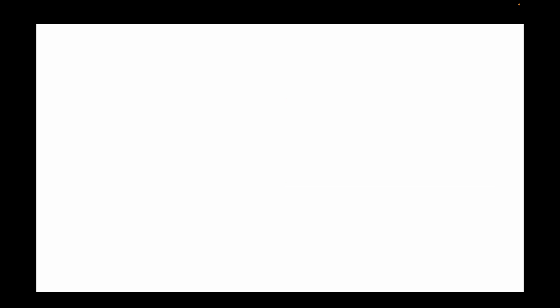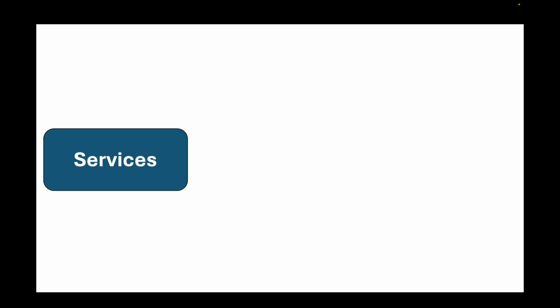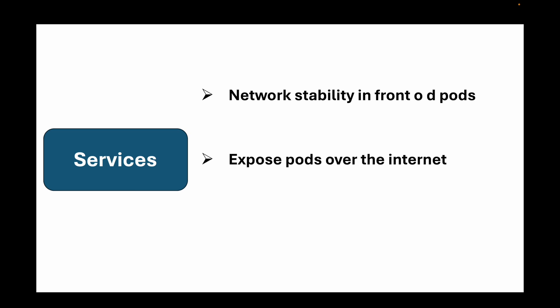The second resource we have is the service resource. Services are used to provide network stability in front of your pods, because pods have a short life cycle which prevents them from having stable and predictable reachability. We will talk more about services in a follow-up session, but for now understand that services are used to expose the pods over the internet so that we can access the application running inside the pods.